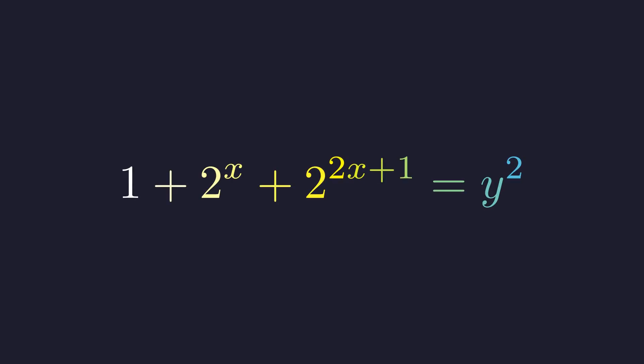Today we're tackling a beautiful problem from the International Mathematical Olympiad 2006, Problem 4. We're on the hunt for all pairs of integers x and y that satisfy this fascinating exponential equation. It looks complex, but with careful case analysis we can unravel its secrets.